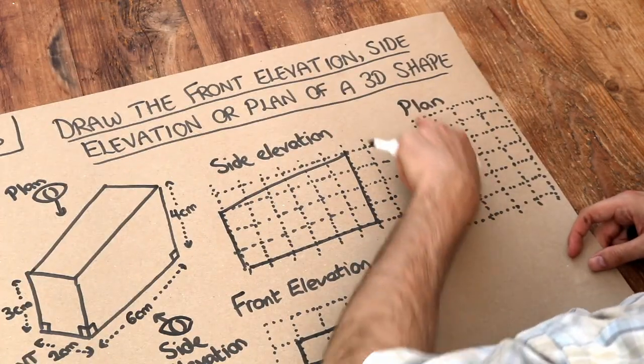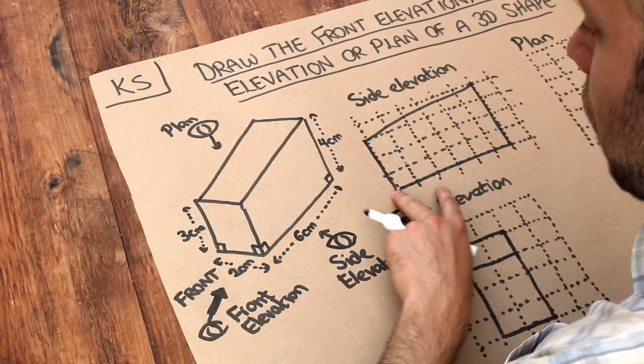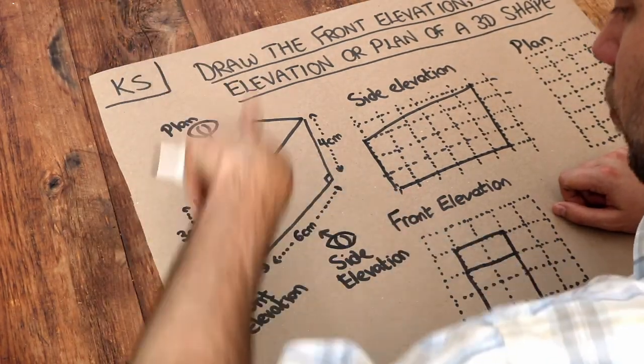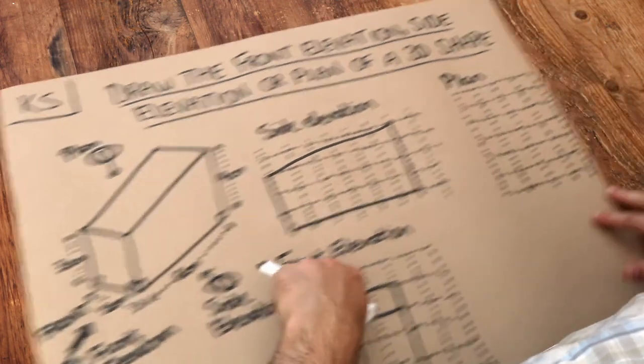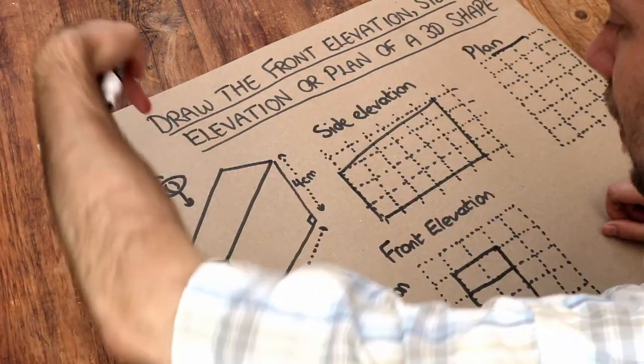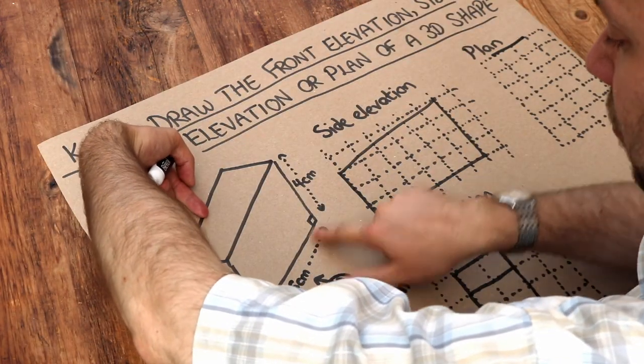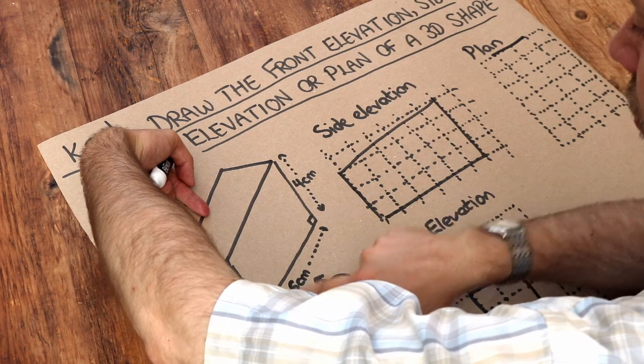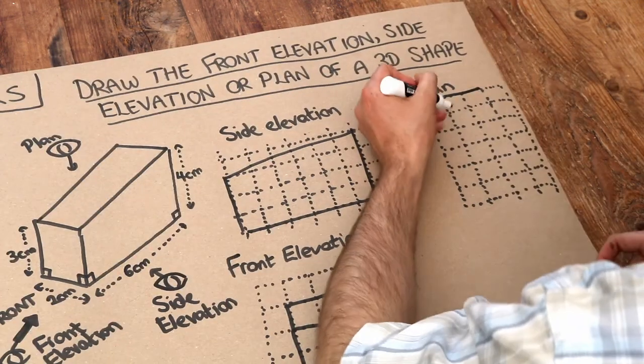Now what about the view from the top, the plan? Well when we're looking from the top we can see that it's two across like this. So if I just draw a two across and then in this direction we can see it's six long like this. So this needs to be six long.